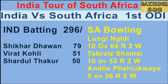First ball of the 32nd over, Jensen to Pant — Pant stands tall and drives it straight back to the bowler for four runs. Fourth ball of the 33rd over, Paul Keough to Shreyas Iyer — Iyer flicks it nicely to short fine leg for four runs.